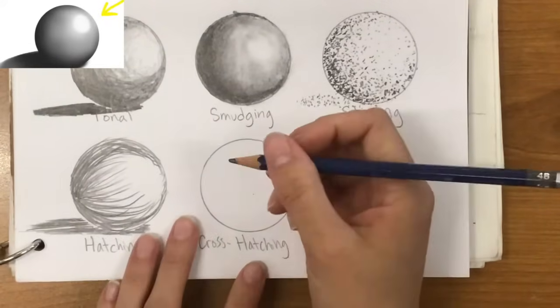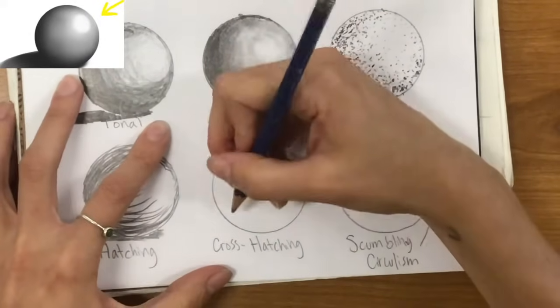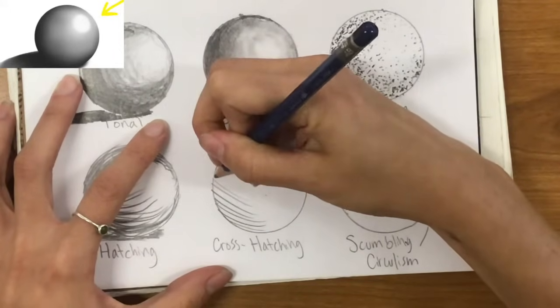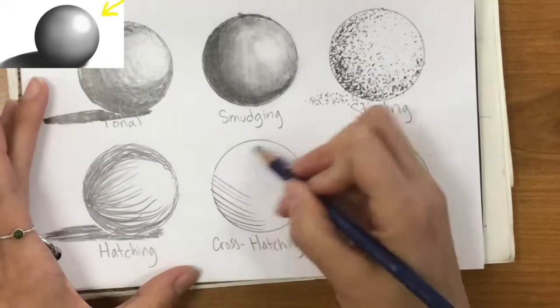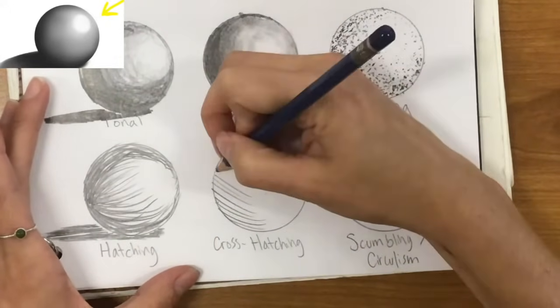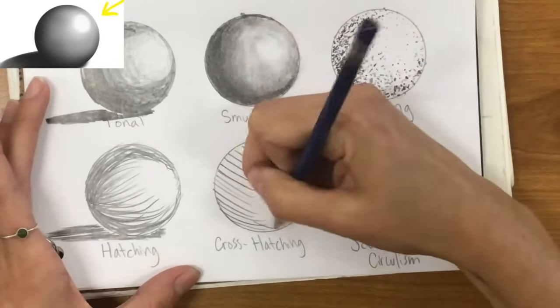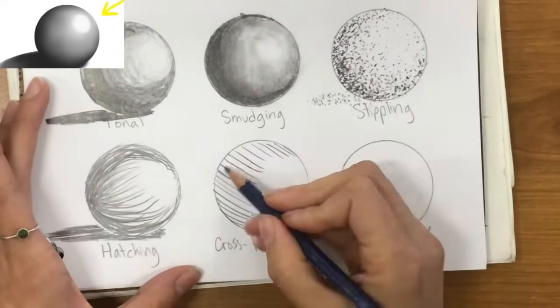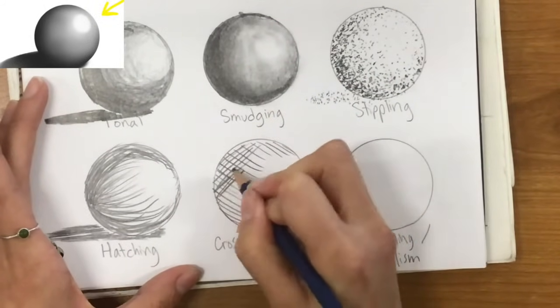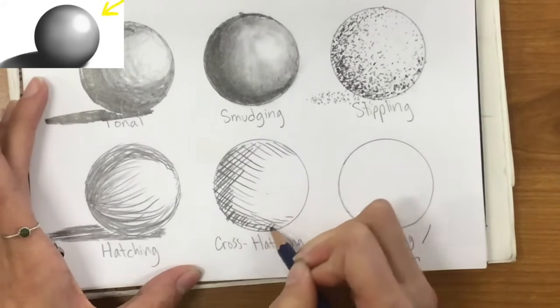And next we have cross-hatching. I'm using my 4B pencil again because it's nice and dark, but not too crazy dark. What we're going to do here is very similar to the hatching. But just for preference, if you would like to continue like following the curve of that sphere, just like we did with the hatching, you can. My preference is just to kind of keep it all going in one direction. But that is totally up to you. And then I'm going to turn my hand here so I can actually crisscross these lines. And I'm going to crisscross a bunch of them right here at the edge because that's where it's going to get really dark.